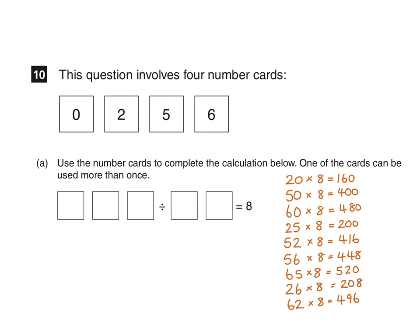You can see we can eliminate some straight away. First of all, we can eliminate 20 multiplied by 8 as the answer here uses a 1 and we do not have a 1. 50 multiplied by 8 makes 400. We have a 0 but we don't have a 4. 60 multiplied by 8 is 480 and again we don't have 4 or 8.